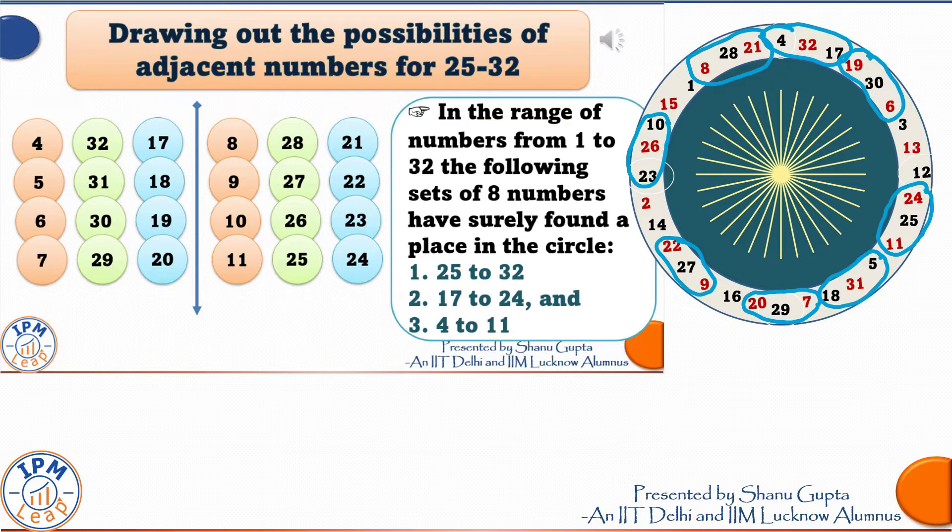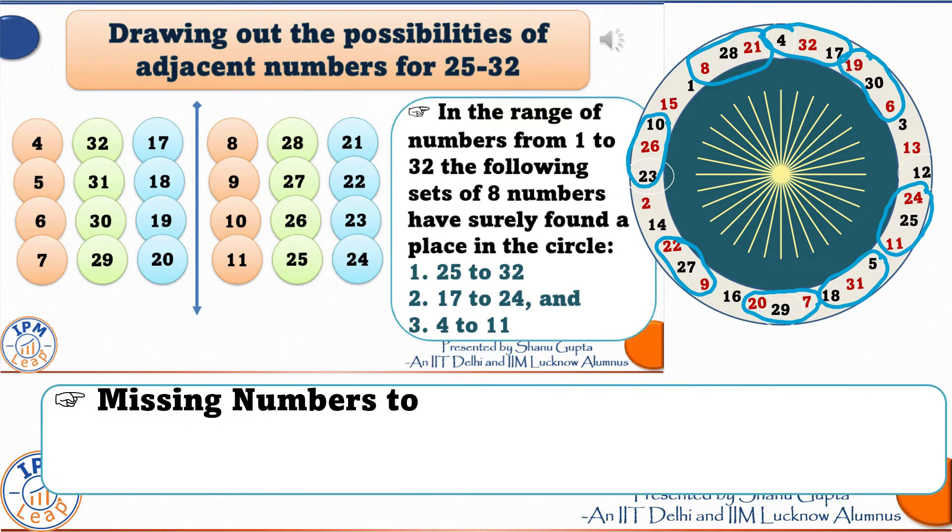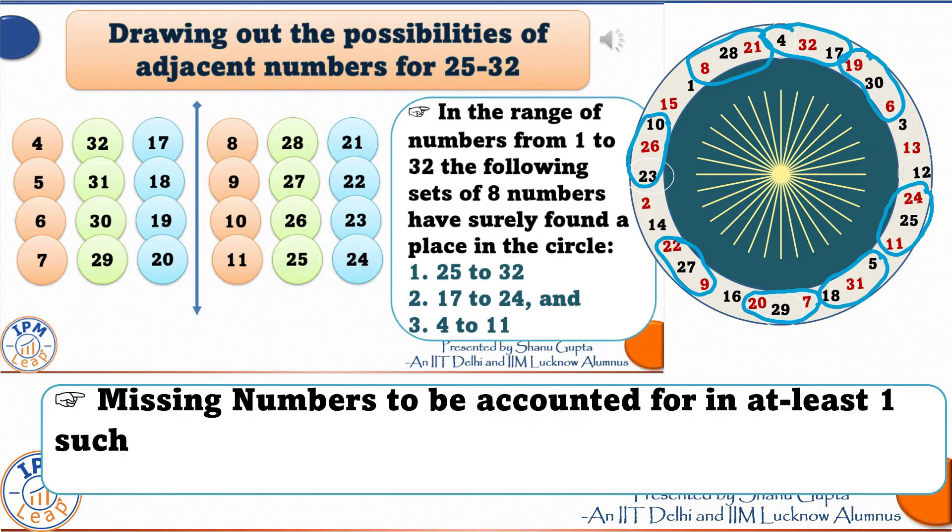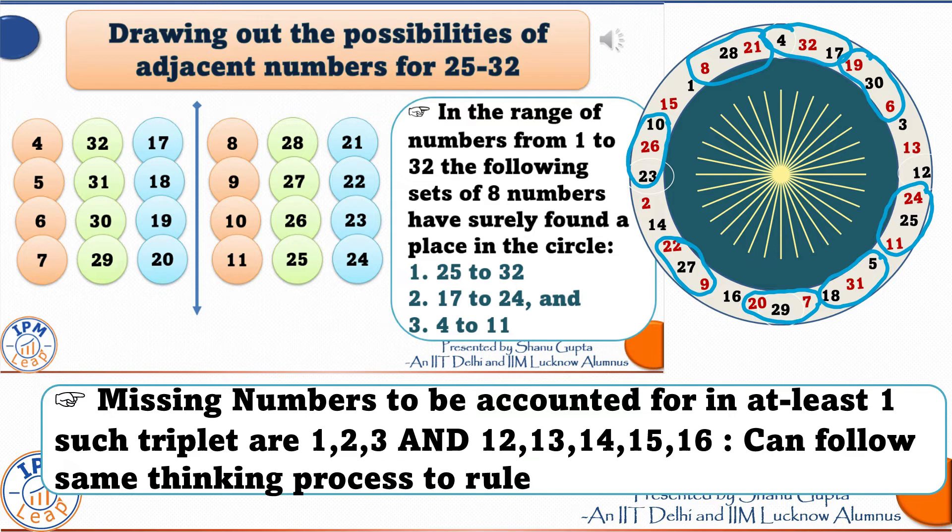So, in short, there are 24 numbers from 1 to 32 which have already found a place on the circle. What are the missing numbers? Well, the missing numbers not yet accounted for are the numbers 1, 2 and 3 and thereafter 12, 13, 14, 15 and 16.